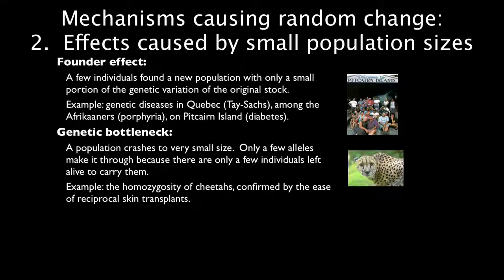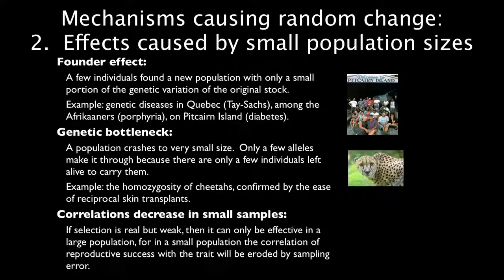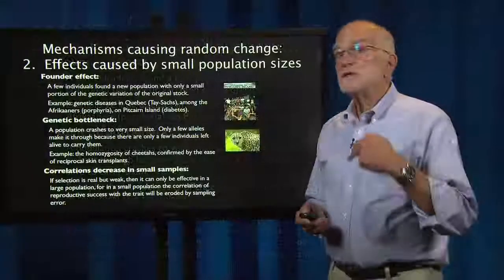The other population-size effect is a genetic bottleneck, where a population crashes to very small size — not a founder effect, but the same population shrinking. Only a few alleles make it through because few individuals carry them. An example is the homozygosity of cheetahs, confirmed by reciprocal skin transplants: you can transplant skin between any two cheetahs in the world and it will not be rejected, showing they have lost that much genetic variation. Additionally, correlations decrease in small samples: if selection is real but weak, it can only be effective in a large population, because in a small population the correlation between the trait and reproductive success is eroded by sampling error.